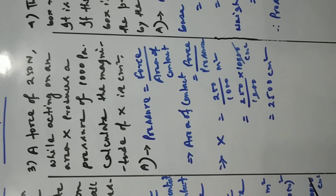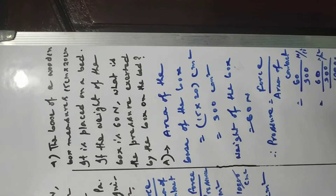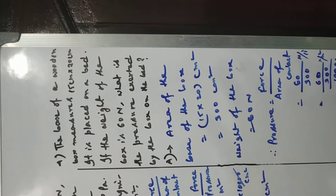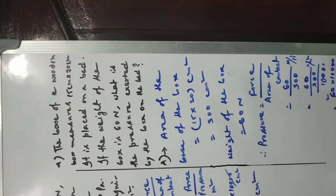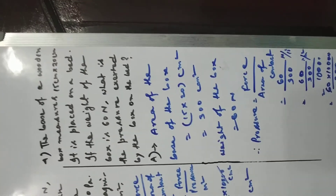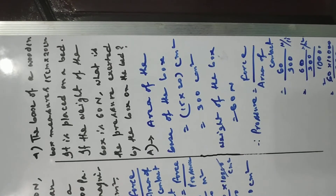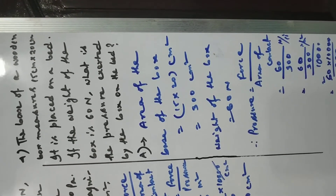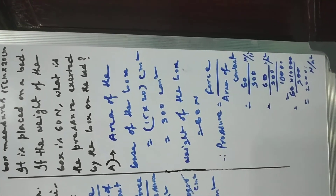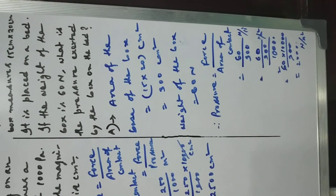Now the fourth example: the base of a wooden box measures 15 centimeter by 20 centimeter. It is placed on a bed. If the weight of the box is 60 Newton, what is the pressure exerted by the box on the bed? The area of the base of the box is 15 times 20 centimeter square, that is 300 centimeter square, and the weight is 60 Newton.